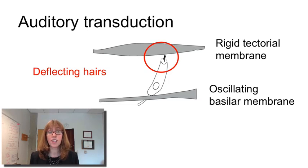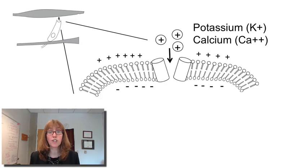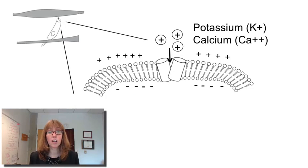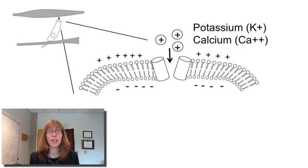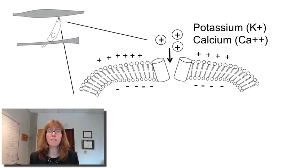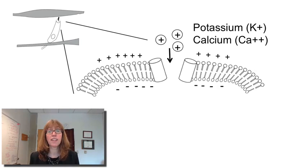It involves ion channels being opened and closed by those deflections. The mechanical forces affecting the hairs cause them to open and close ion channels that allow two positively charged kinds of ions, potassium or calcium, to flow into the hair cell. That in turn changes the electrical potential inside the neuron and serves to convert that mechanical signal into an electrical one.